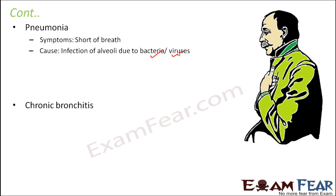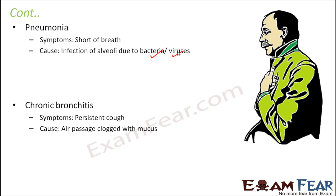The last disorder is chronic bronchitis. The symptom here is persistent cough — the patient tends to cough a lot. This happens due to the air passage being clogged with mucus. The nasal cavity and nasopharynx are lined with ciliated epithelium and mucus for protection, but if any irritant reaches the bronchi or bronchioles, it increases mucus secretion. Due to this over-secretion, the air passage gets clogged, causing the patient to cough persistently.